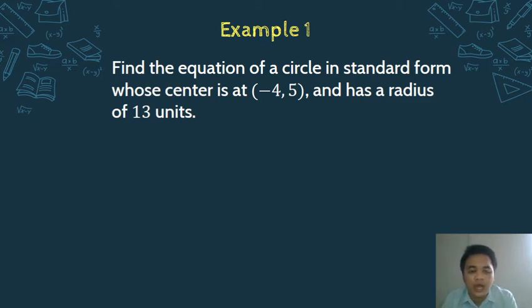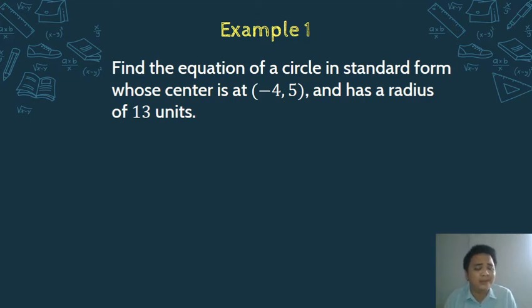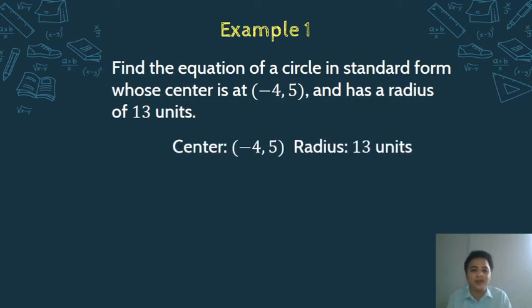What is asked here is the standard form of the circle. Now that you know what is asked, find the given. What are the givens? In our problem there are two givens: the center is at negative 4 comma 5, and the radius is 13 units.